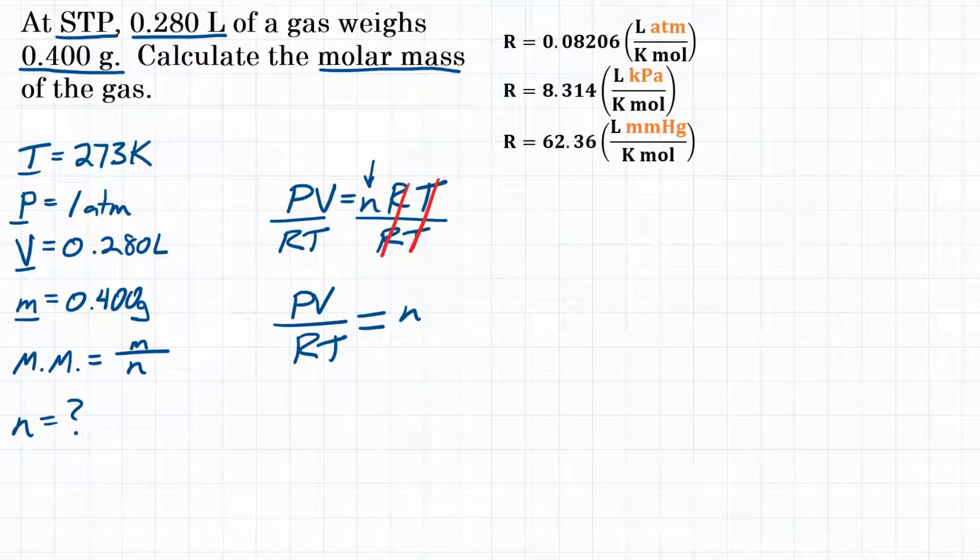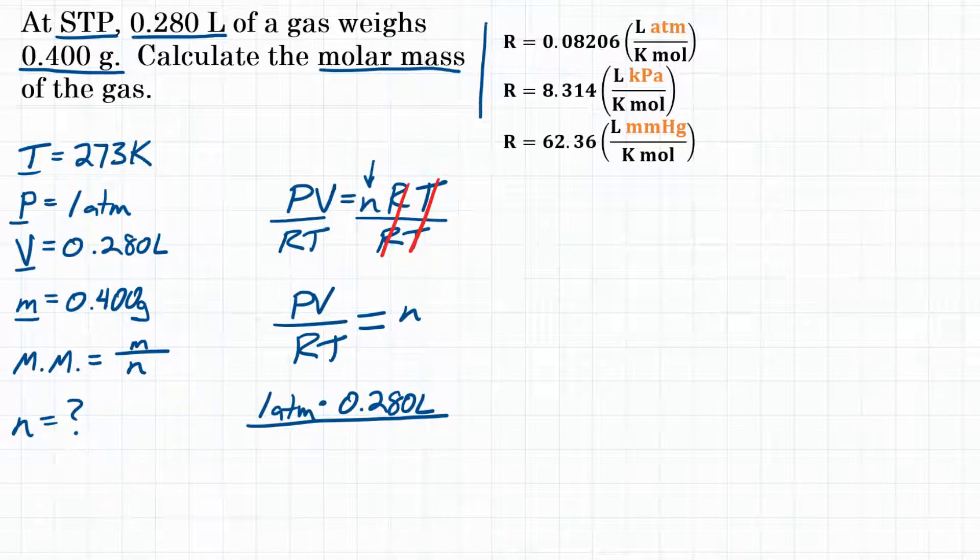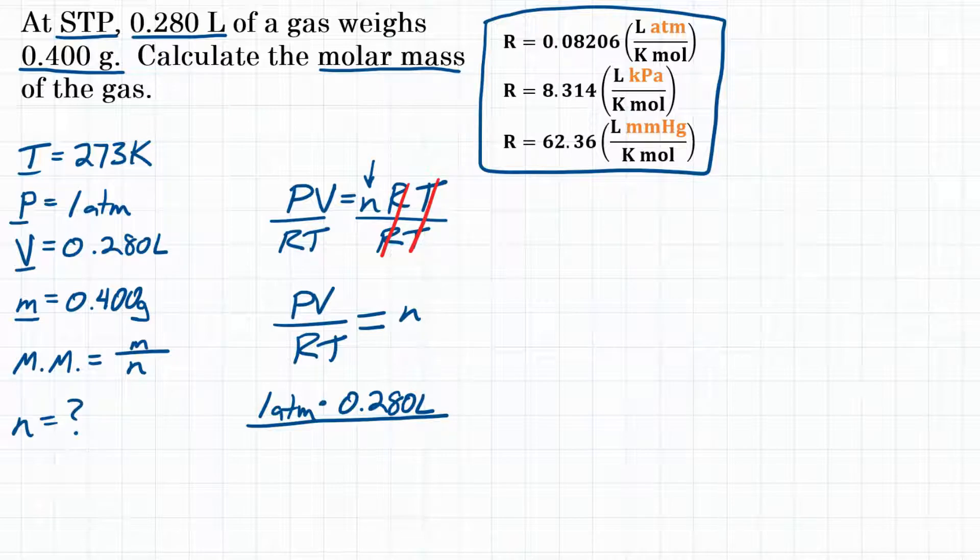Now we can plug in our values and solve. For pressure, we have 1 atmosphere, multiplied by volume, which is 0.280 liters. Divide those by RT. Our value for R is going to be one of these three values. We have multiple R values because it depends on the units of pressure. We have to look and see what units of pressure we were given in the problem.